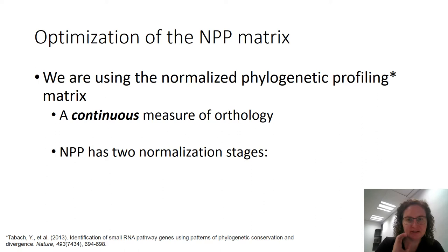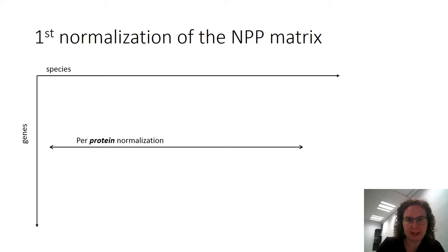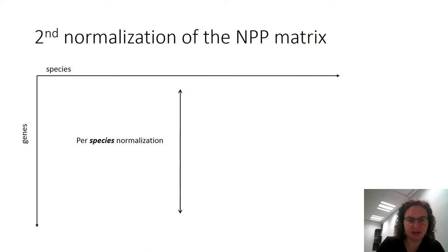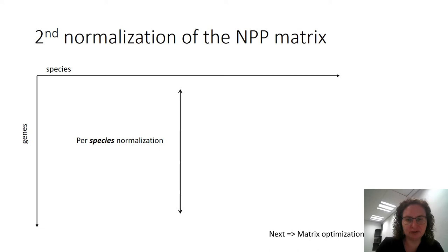The first stage was to optimize the NPP matrix. We use the normalized phylogenetic profiling matrix, which is a continuous measure of orthology, and we use two normalization stages. The first is per-protein normalization to normalize for the length of the protein, which affects the BLAST bit score, giving us the LPP — length-normalized phylogenetic profiling. The second is per-species normalization, which does z-scoring: asking whether a protein is conserved more or less than expected in a specific species, because 50% conservation in yeast is very high while in gorilla it is very low.